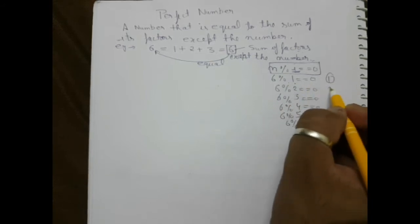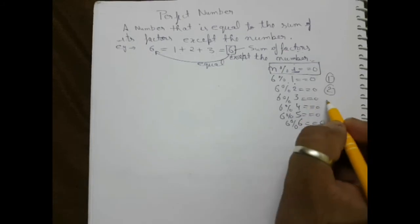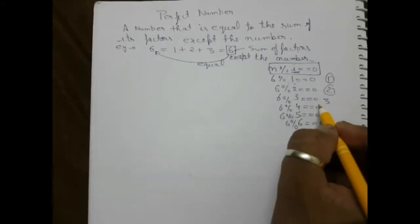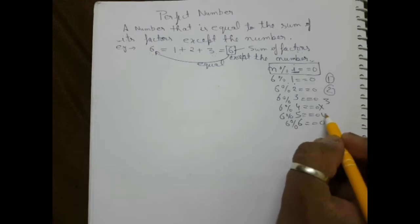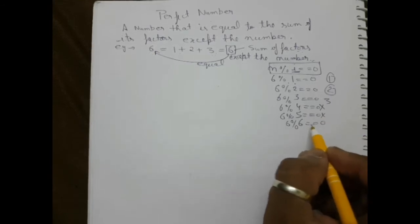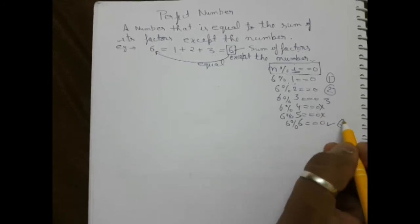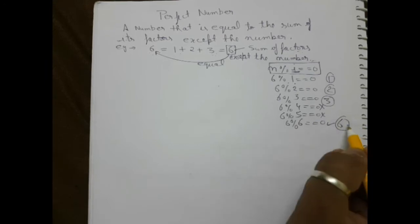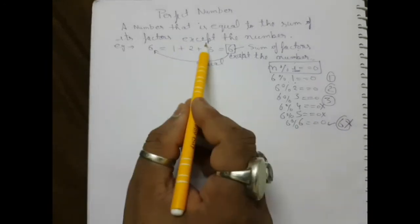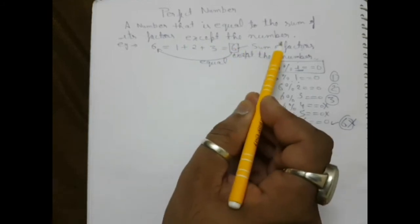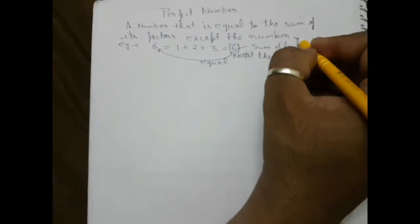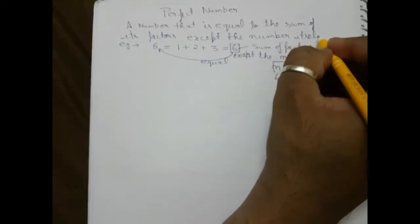Here, one is able to divide, so it is a factor. Two is a factor, three is a factor. Four does not divide, so it is not a factor. Five is also not a factor. Six is a factor, but it will not be included because the concept says except the number itself.